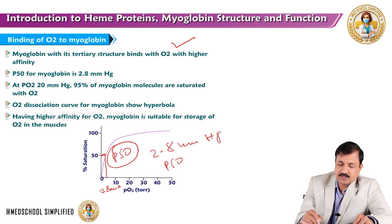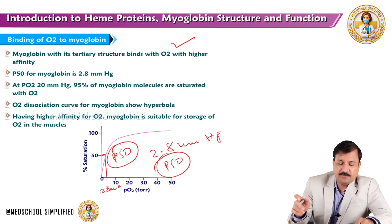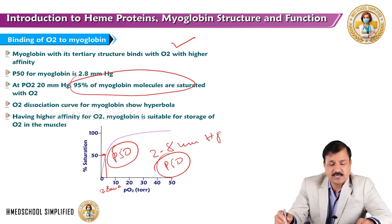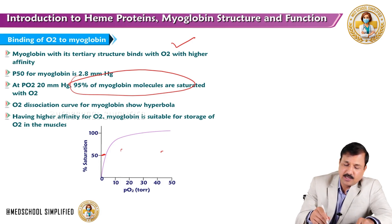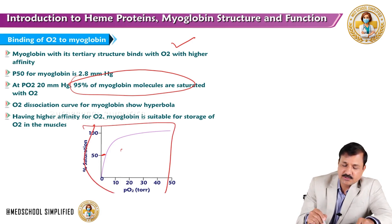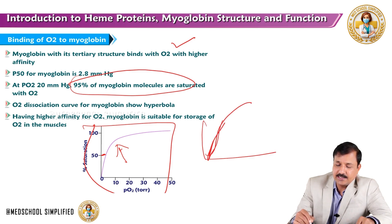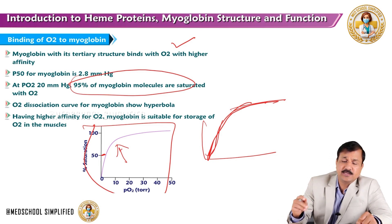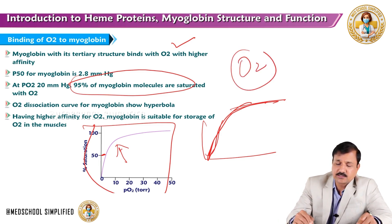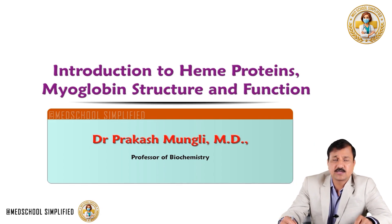A lower P50 indicates higher oxygen affinity. At 20 mmHg, 95% of myoglobin is already saturated. The oxygen dissociation curve for myoglobin is hyperbolic, which indicates increased oxygen affinity. This means myoglobin does not release oxygen easily and has higher affinity for oxygen. Therefore, myoglobin is suitable as a storage form of oxygen rather than a transporter of oxygen.